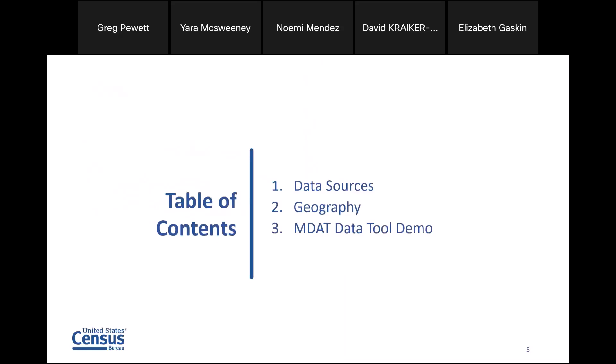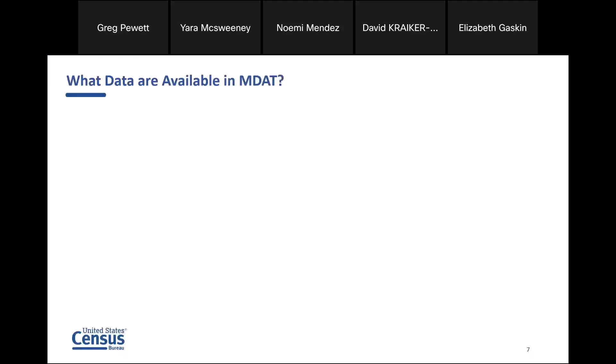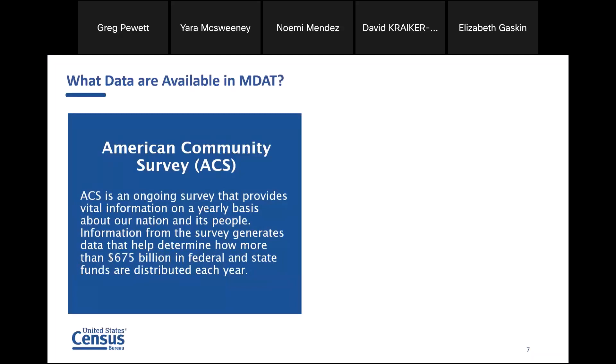Here's my table of contents. First, we'll go over data sources, then switch into geography, and finally do the demo. So, data sources — what's available in the MDAT tool? First, we have the American Community Survey. This is our biggest survey — an ongoing survey that provides information on a yearly basis about our nation and its people. The information from this survey generates data that helps determine how more than $675 billion in federal and state funds are distributed every year.